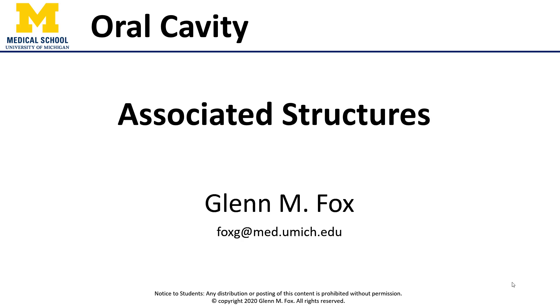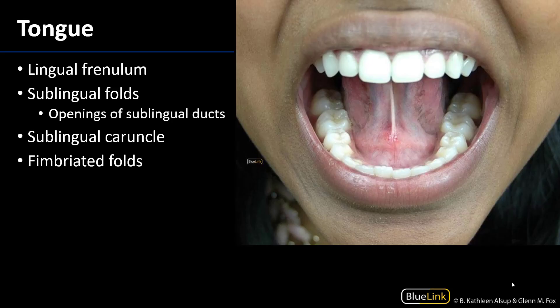Let's talk about the associated structures of the oral cavity. In the photograph to your right, you're looking at an individual with their mouth open, so the oral fissure is very wide. We can see some maxillary teeth and some mandibular teeth, keeping in mind that the oral vestibule is on the superficial side of the dental arcade and the oral cavity proper is deep to the dental arcade.